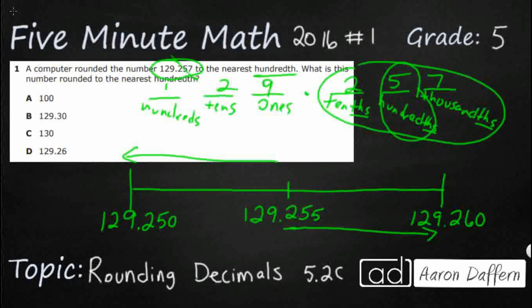So once we see this, it's pretty simple to see where our 257 lies. Our 257 is going to lie right around here, 129.257 thousandths, which means it's going to be a part of the group that's going to round up to 129.26.